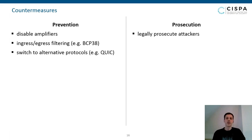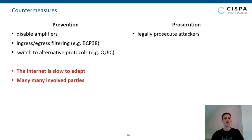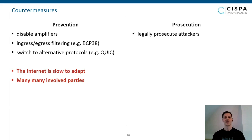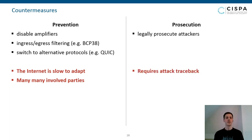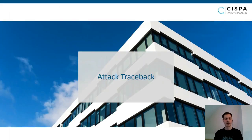There's a good reason to pursue prosecution because the internet is really slow to adapt, mostly because there are many involved parties. This can be clearly seen in the fact that IPv6 has been introduced for roughly 30 years and the adoption rate is still very low. Prosecution, of course, has the drawback that you need to be able to attribute and trace attacks — and that's what I've been working on mostly during my PhD.